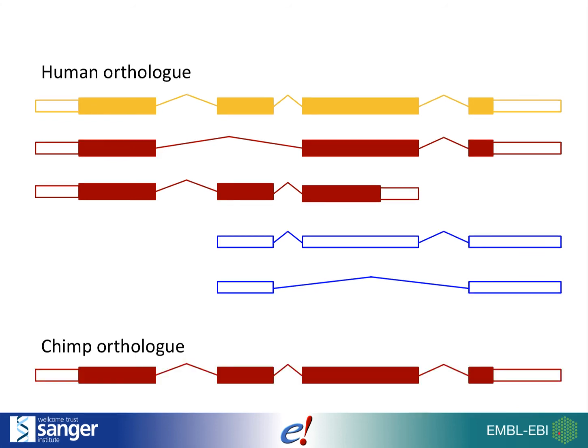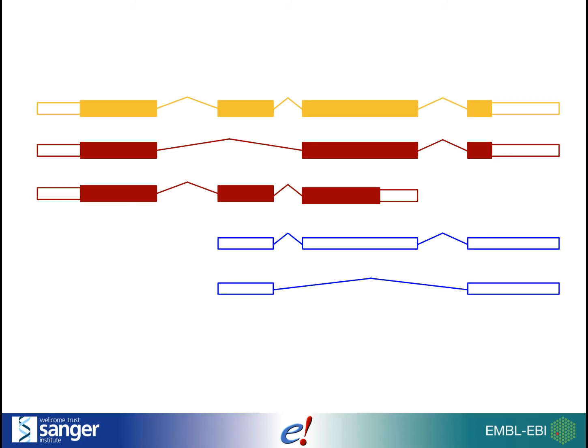Many transcripts may exist in nature that science doesn't know about yet. Species which have not been as extensively studied will not have as many known transcripts as others. On top of the genes, we plot other kinds of data. Variation between individuals, which all comes from biological data, is plotted onto the genome.